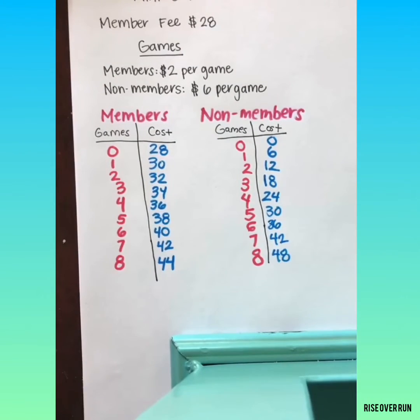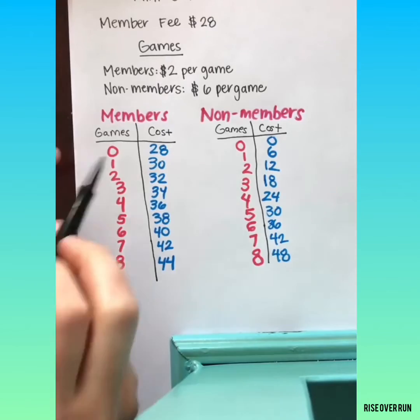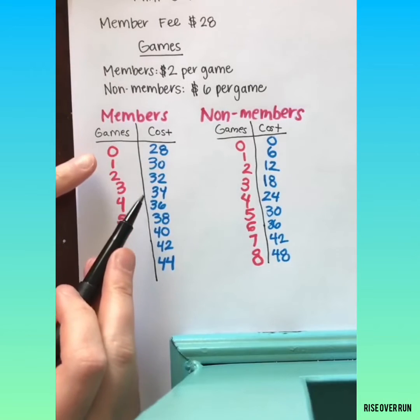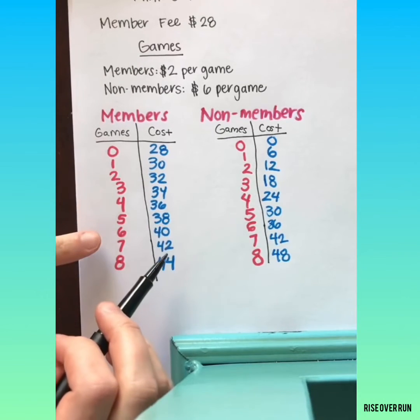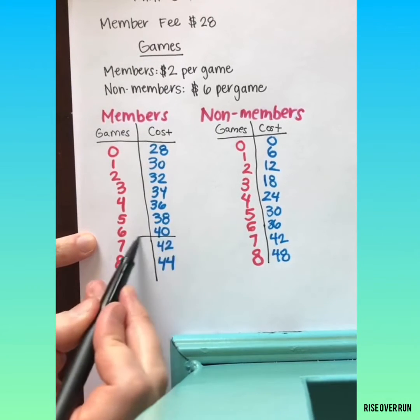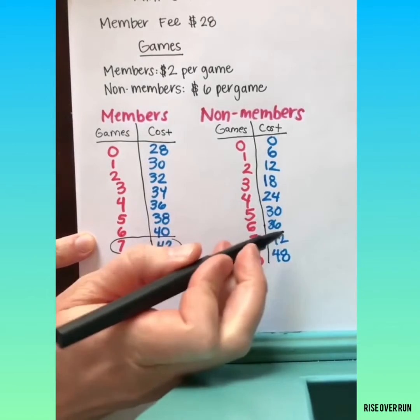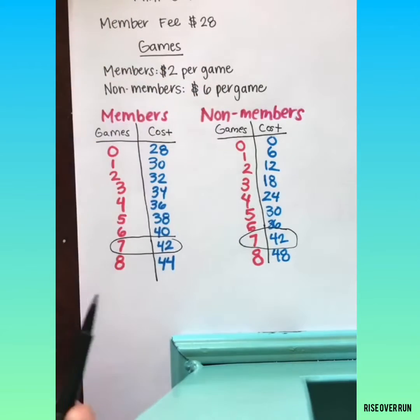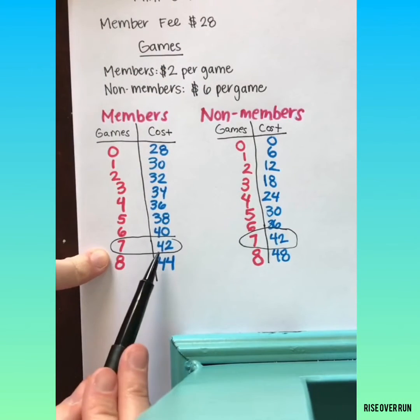To use a table of values to solve this system, we're looking for when the x and y are the same in both tables. So if we look down our list here, we can see 7, $42 and 7, $42. So that means for both members and non-members, seven games will cost $42.